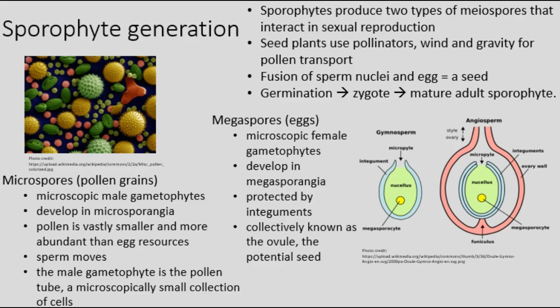Sporophytes produce two types of spores that interact in sexual reproduction. Microspores — i.e., pollen grains — develop in microsporangia. Likewise, megaspores develop in megasporangia, which are protected by integuments, collectively known as the ovule — the potential seed. The megaspore develops into the female gametophyte, which can contain one or more egg cells. Rather than relying on water for sexual transport, seed plants developed mutualistic relationships with other organisms that facilitate pollen transport, and they can also exploit wind or gravity. Pollen is vastly smaller and more abundant than egg resources, and therefore it is the sperm that engage in movement.